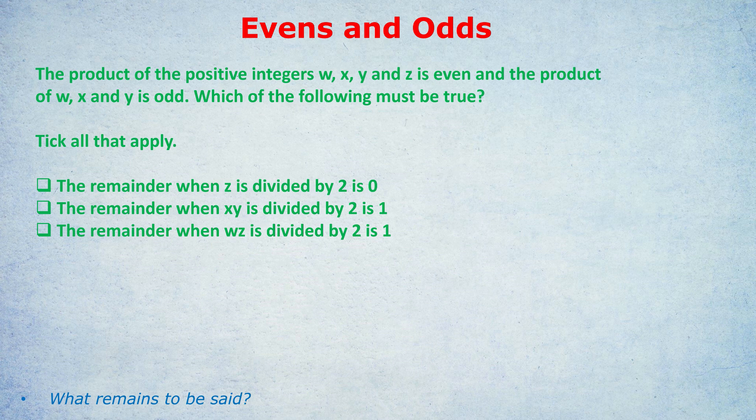Let's quickly recap: the product of W, X, and Y is odd, meaning all three are odd. Therefore, the only way that W, X, Y, and Z is even is if Z — that extra letter — was even. All it takes is a single even in a product to make the whole product even. So we know W, X, and Y are all odd, and Z is even.